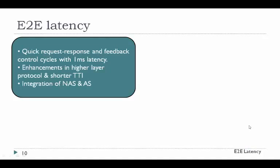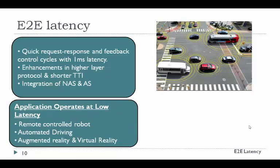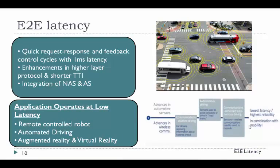End-to-end latency — the round-trip delay between transmitter and receiver — is an important factor for real-time applications. Safety-critical applications for cars and humans built around vehicle-to-vehicle and vehicle-to-infrastructure communication require very quick request-response and feedback control cycles with high availability and reliability. Networks must be able to support a target of 1ms end-to-end latency with high reliability. A new air interface with new numerology such as shorter transmission time intervals can reduce over-the-air latency to a few hundred microseconds. Efficient design of the non-access stratum could also help reduce end-to-end latency. Emerging applications include remote control robots, automated driving, augmented reality, and virtual reality.